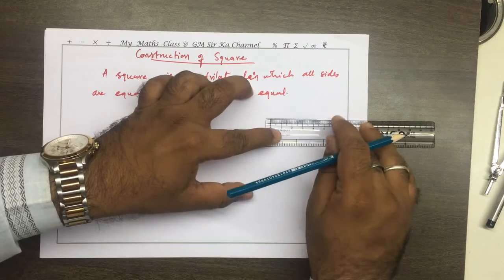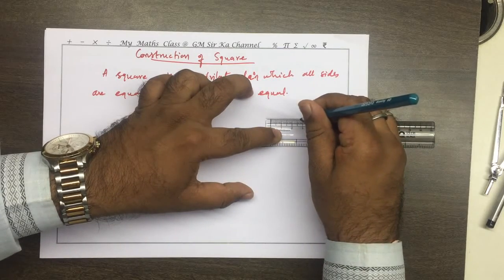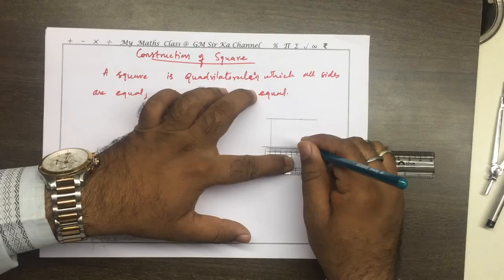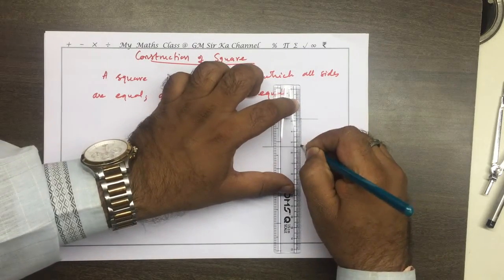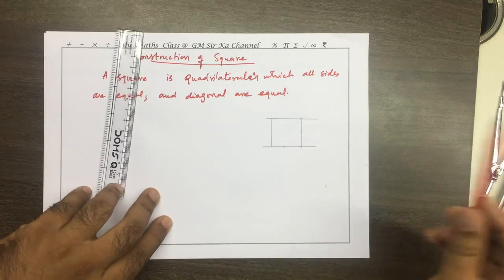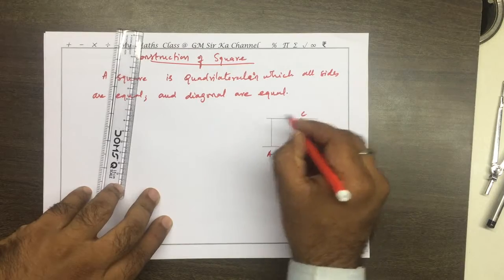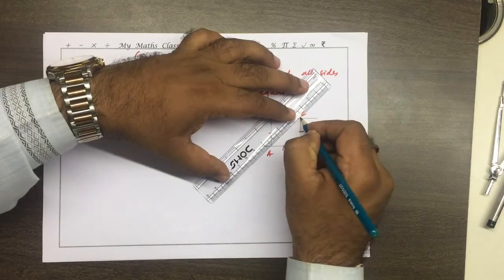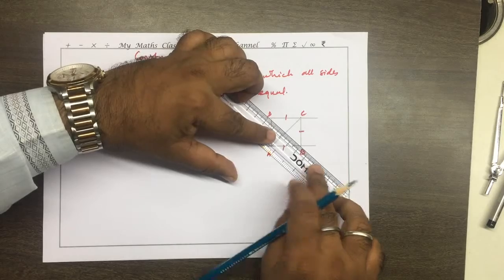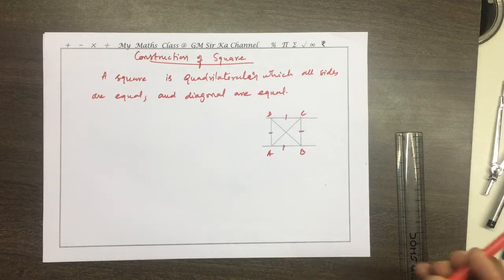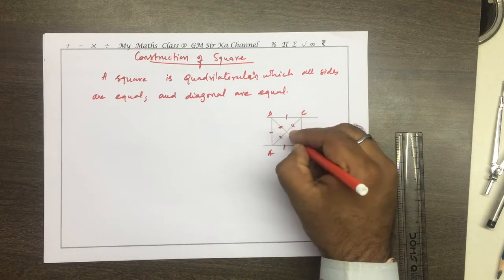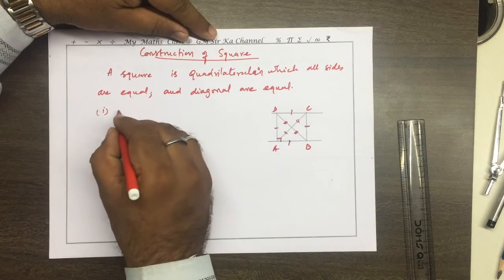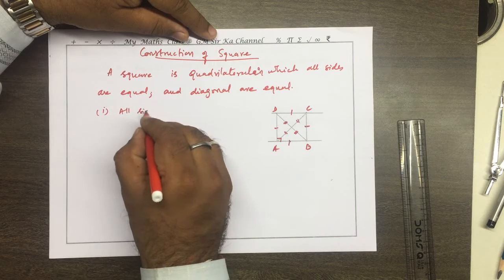All sides of a square ABCD are equal. Also, the diagonals are equal and bisect each other. Each angle of a square is 90 degrees. So the properties of a square are: all sides are equal, diagonals are equal, diagonals bisect each other, and each angle is equal to 90 degrees.